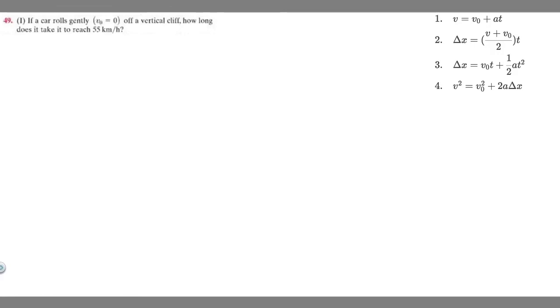In this problem we're told if a car rolls gently off a vertical cliff, how long does it take to reach 55 kilometers per hour? We're told right off the bat that our initial velocity, which is v sub zero, equals zero.